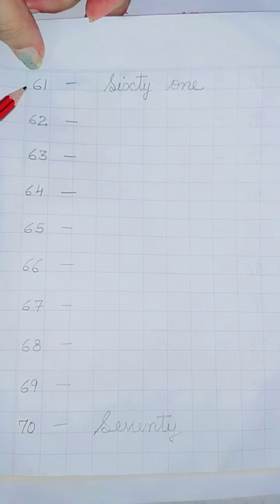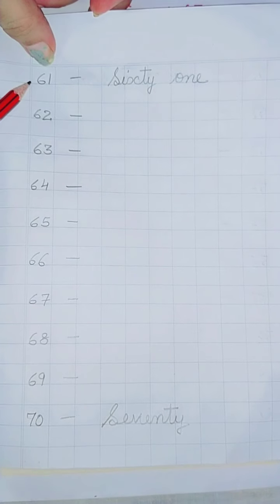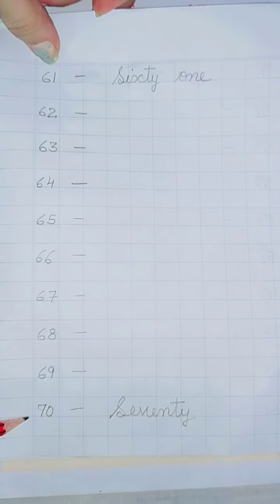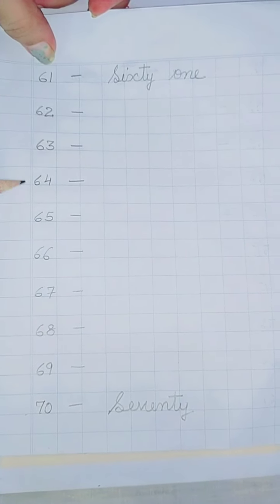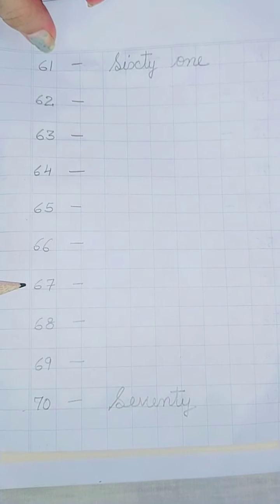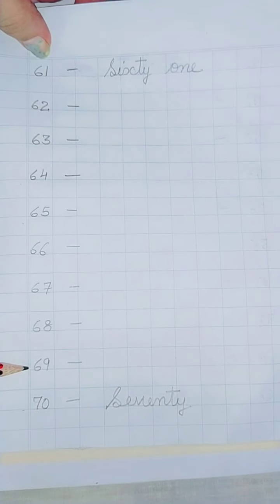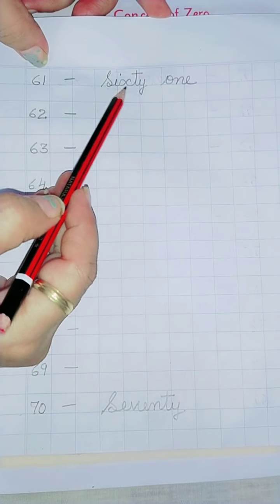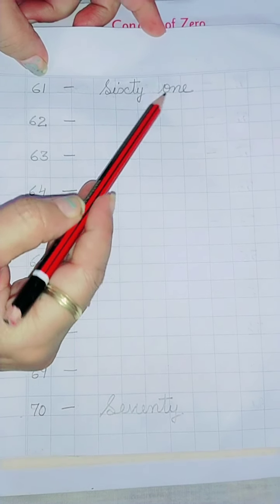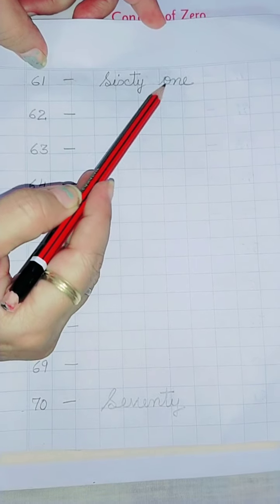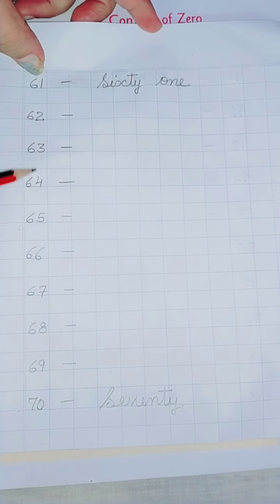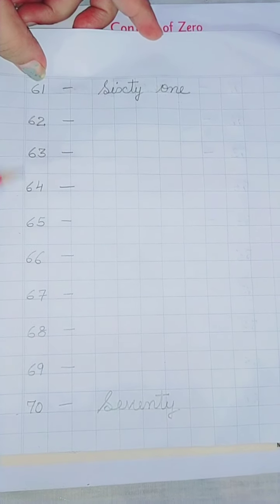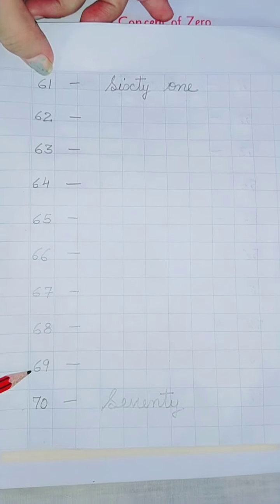Leave it one, next page, you will write 61 to 70 numbers. 62, 63, 64, 65, 66, 67, 68, 69, 70. 61 spelling S-I-X-T-Y-60-O-N-E-1, 61. Now again this is one page homework for you. You have to write the spelling till 69.